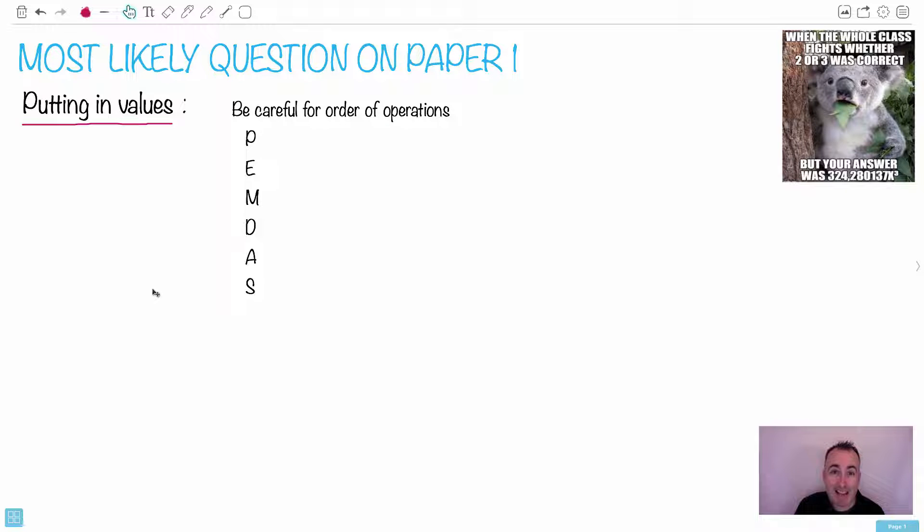Let's start with what's the most likely question on paper one. I love this koala here, when the whole class fights whether two or three was correct, your answer is some crazy number. The very common question on the exams, especially on paper one, is when we have to put in all the data into some crazy equation and do some rounding and significant figures and scientific notation. So that's what I'm going to show you, is build up these different skills.